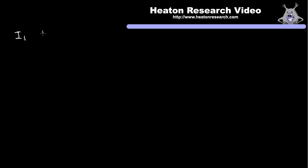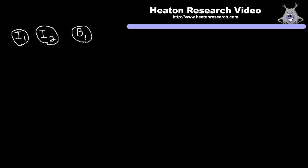We're going to have input one, input two, and then we're going to have a bias neuron up here that's also going to feed into the next layer. So these are all of the neurons that we're actually dealing with, at least at this layer. It's going to accept input into inputs one and two. The bias is always going to have an input of one, which is just like we've seen before.